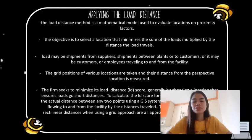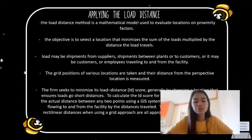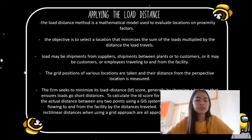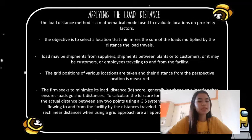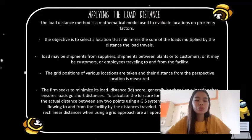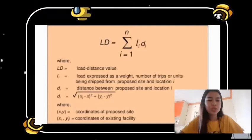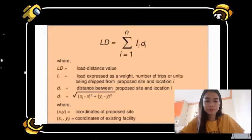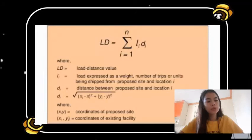Load may be shipments from suppliers, shipments between plants or to customers, or customers and employees traveling to and from the facility. The grid positions of various locations are taken and their distance from the prospective location is measured using a map placed on a graphical sheet. The firm seeks to minimize its load distance score by choosing a location that ensures loads travel short distances.